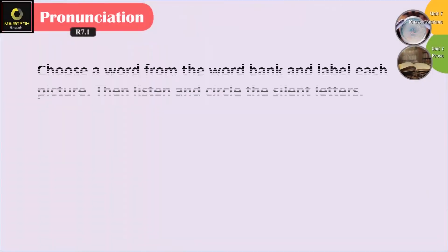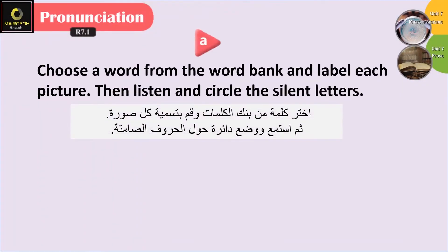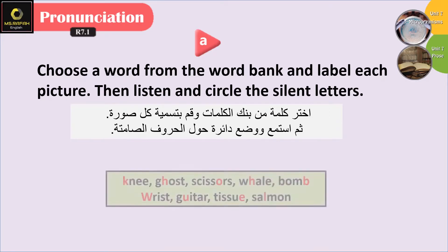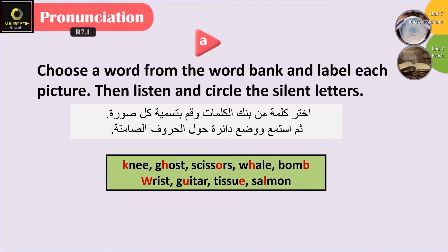Let's see question A. Choose a word from the word bank that best names each picture. Then listen and circle the silent letters. The words are: Knee, Ghost, Scissors, Whale, Bomb, Wrist, Guitar, Tissue, Salmon.